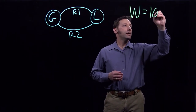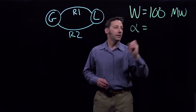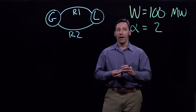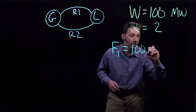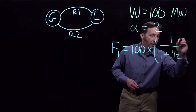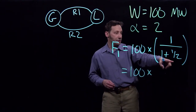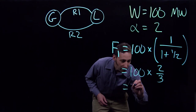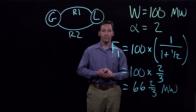As an example, let's take w equal to 100 megawatts and alpha equal to two. The flow on line one is going to be equal to w times one over one plus one half. So this is going to be equal to 100 times the distribution factor, which in this case is two-thirds. That gives us 66 and two-thirds megawatts flowing on line one.